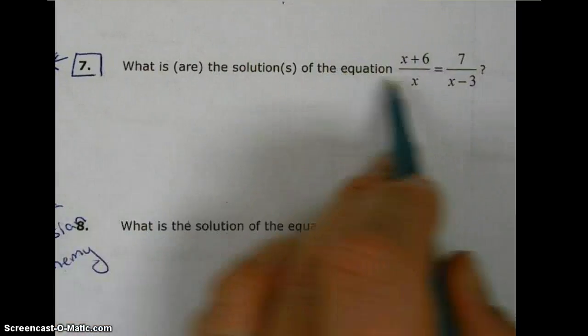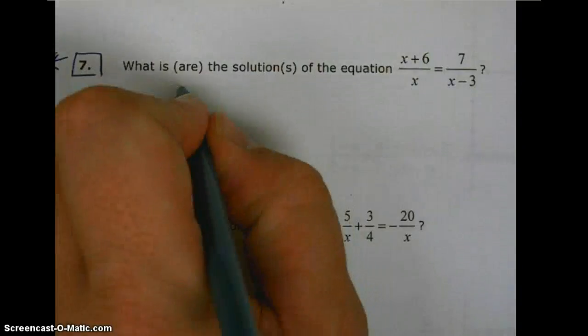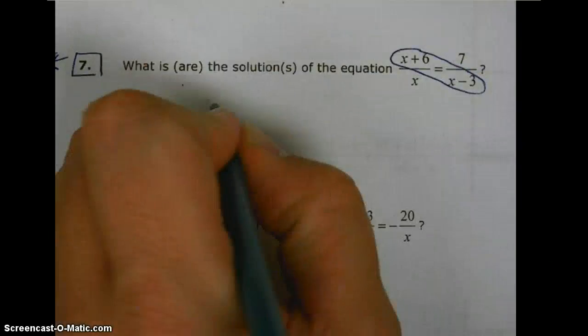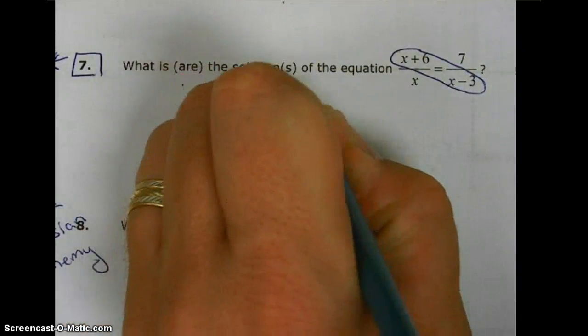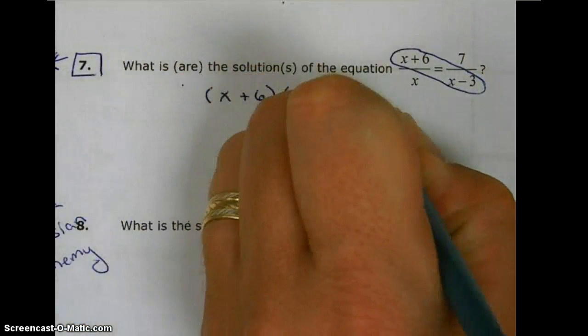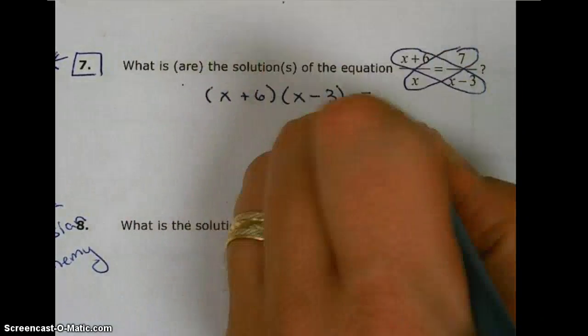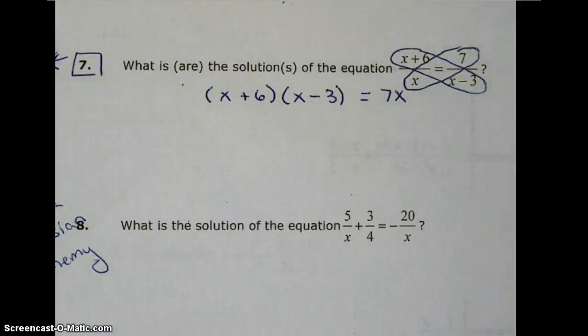So since we have a proportion, we're going to cross multiply. And we get, when we cross multiply this way, we get x plus 6 times x minus 3 equals, and then when we cross multiply this way, we get 7x cross-multiplying.